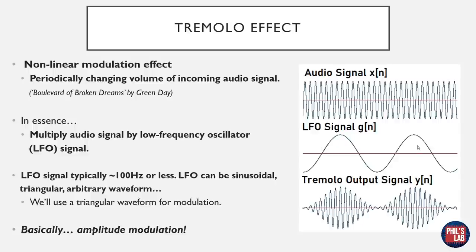The LFO signal is typically on the order of 100 Hz, maybe a bit more or less. The LFO signal can be sinusoidal, triangular, or pretty much any waveform you desire to achieve a certain effect. In this video we'll be using a triangular waveform because this is easiest to generate and least computationally expensive. As you can really see, the tremolo effect is essentially just amplitude modulation.